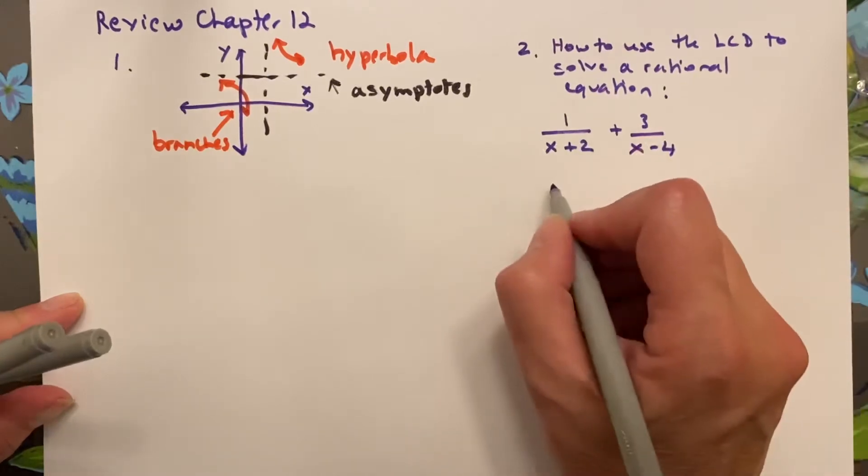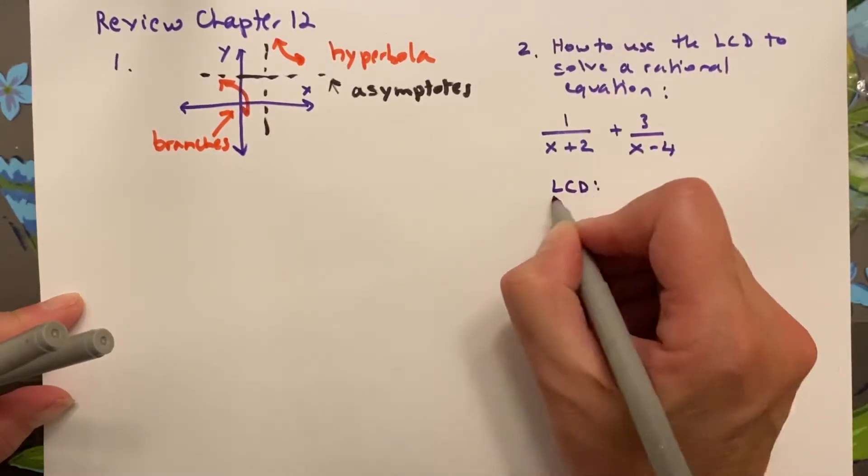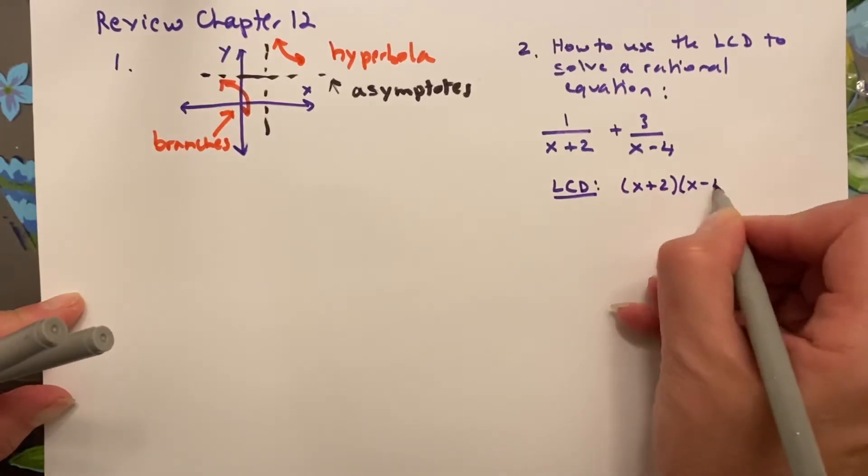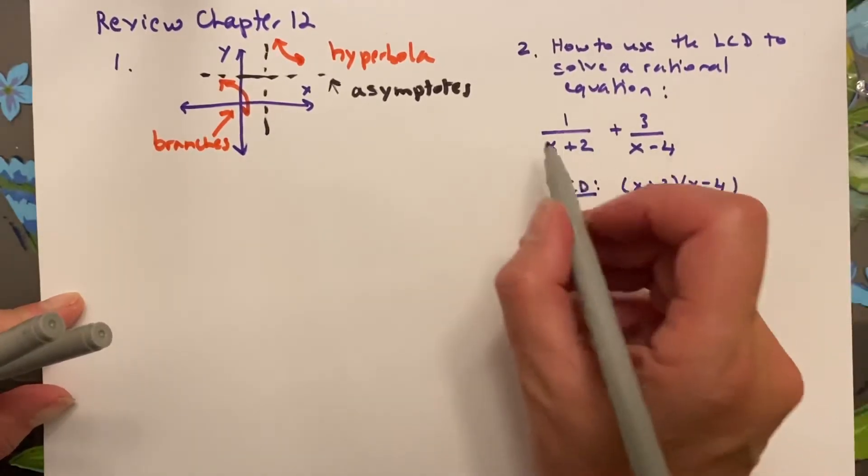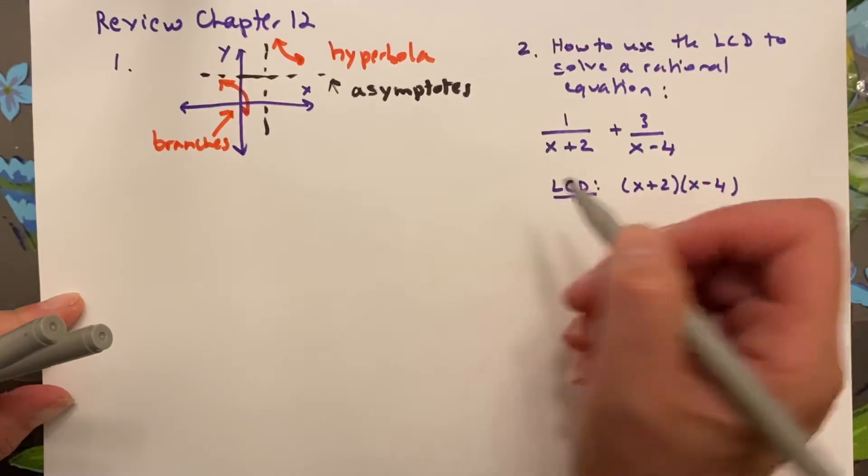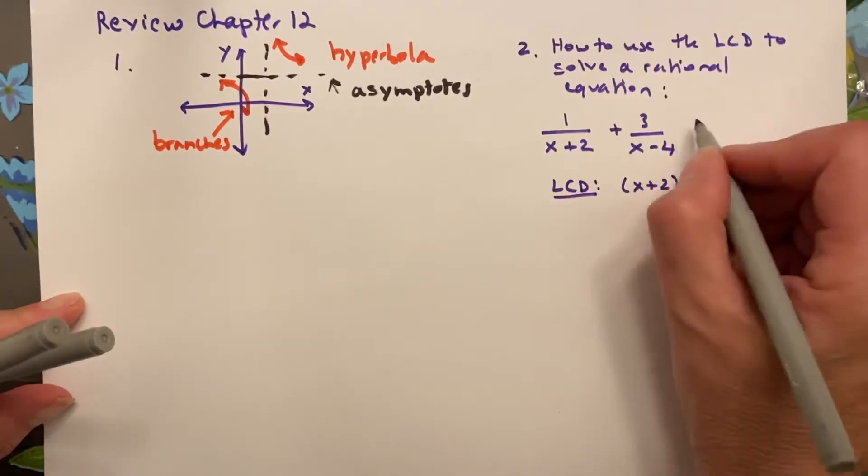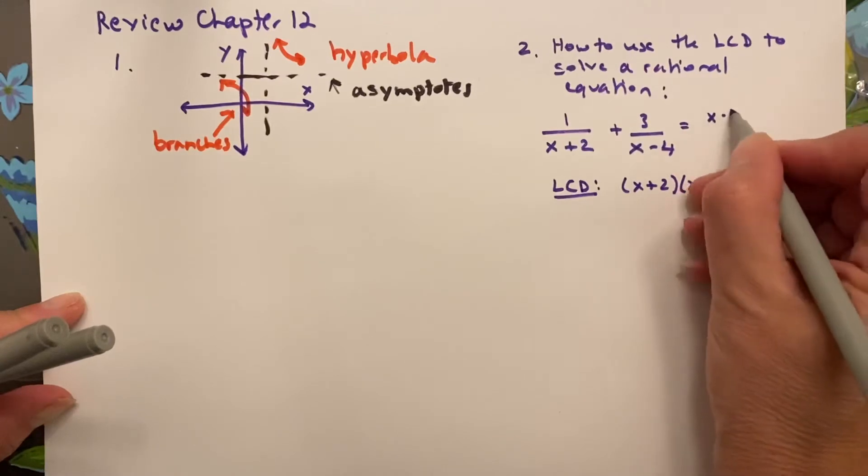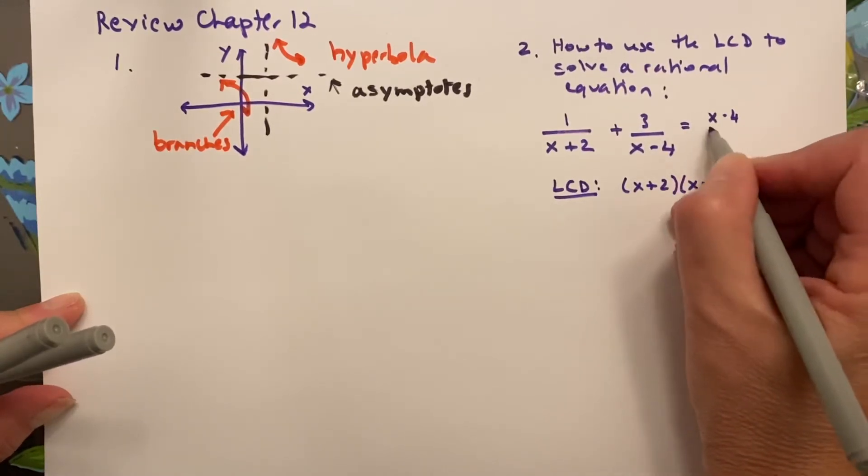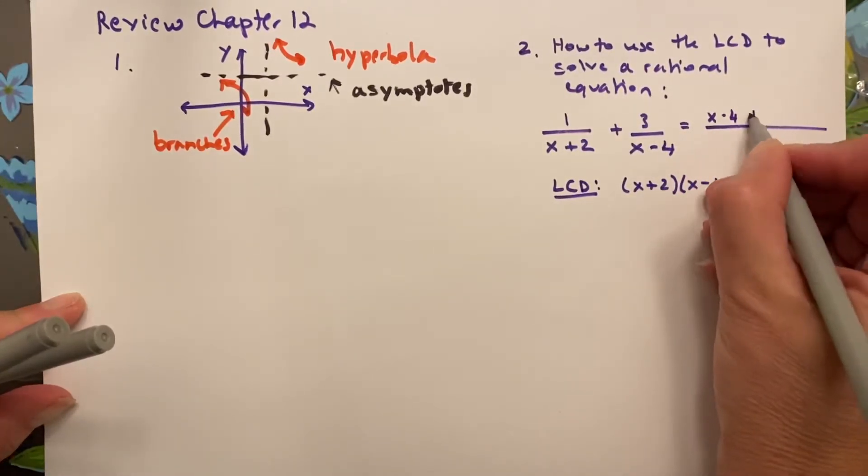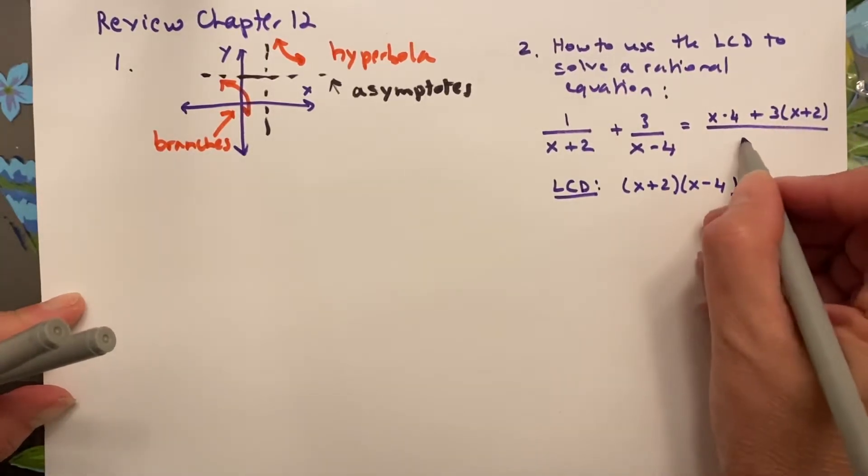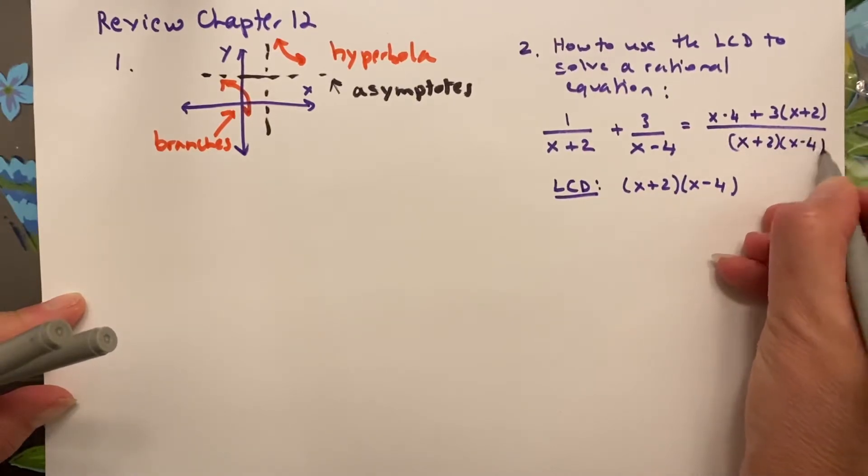The LCD, or the least common denominator, is going to be x plus 2, x minus 4. So you multiply top and bottom by each, and you end up with x minus 4 plus 3 times x plus 2 over x plus 2, x minus 4.